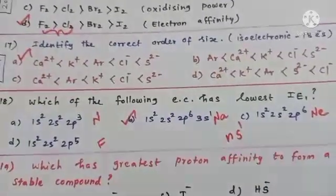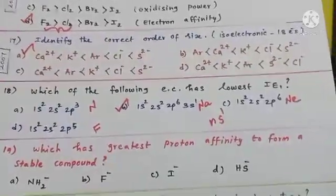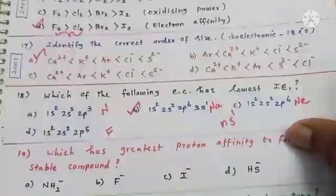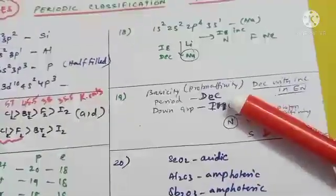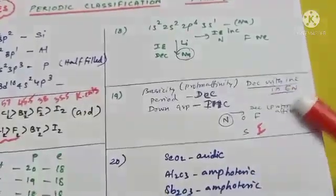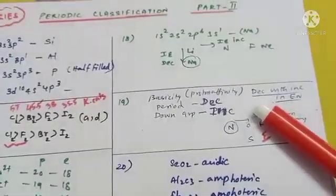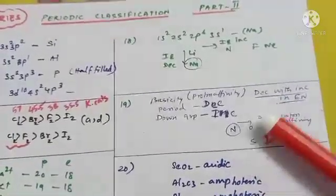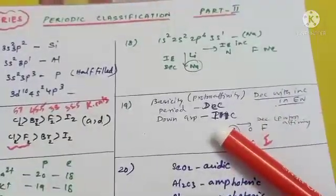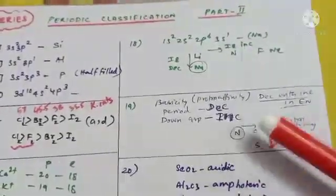Question 19: which has the greatest proton affinity to form a stable compound? Proton affinity is essentially basicity. Basicity decreases with increasing electronegativity, and across a period electronegativity increases — so across a period proton affinity decreases. The given elements nitrogen, oxygen, and fluorine are all in the same period, so proton affinity decreases from nitrogen to fluorine.